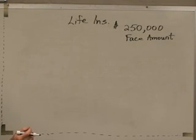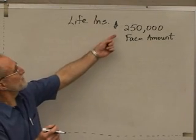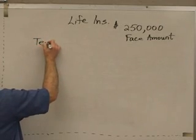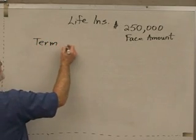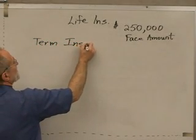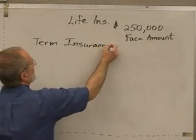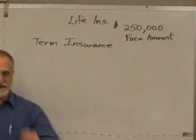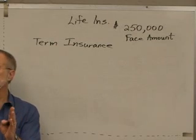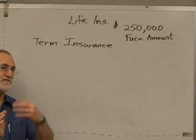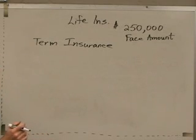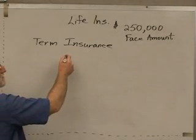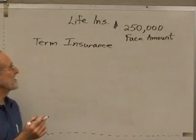Now, this $250,000 face amount — the least expensive way to buy life insurance is what's called term insurance. That means we're buying this life insurance for a specified term of years, usually five years, ten years, or twenty years. And we can pay for it a year at a time or five years at a time.